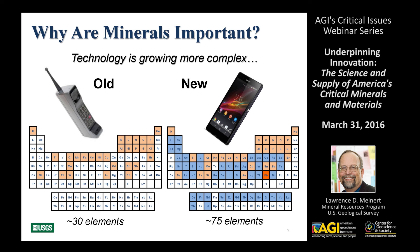The cell phone that everybody has in their pockets has changed dramatically over the last 20 to 25 years. On the left it shows the old cell phones that you more or less had to lug around in your briefcase, and they use roughly 30 elements to make them function. A modern cell phone uses almost the entire periodic table — in excess of 75 elements. Each and every one of those elements is critical for the functionality of that device.